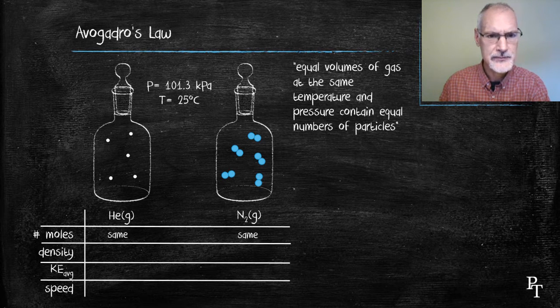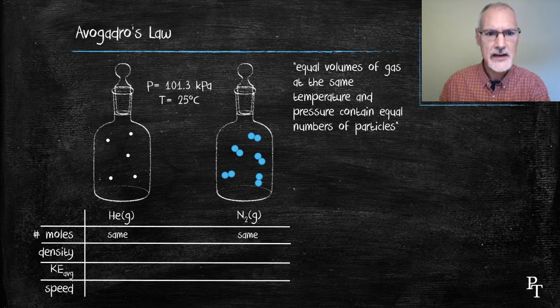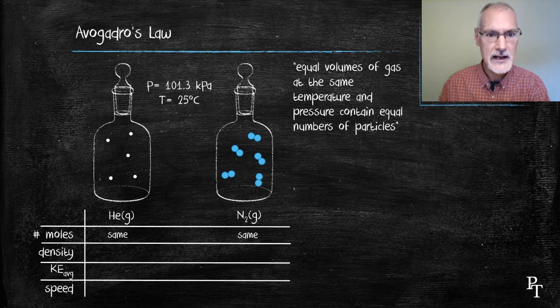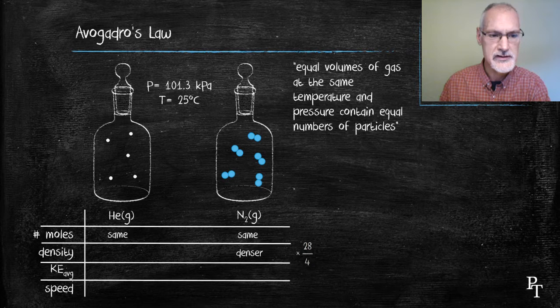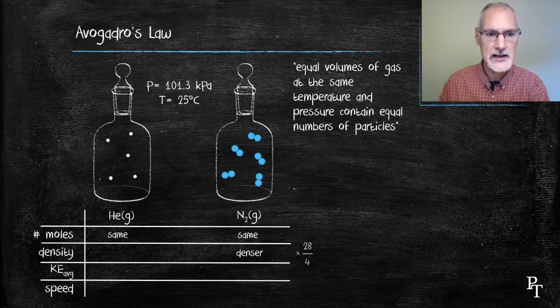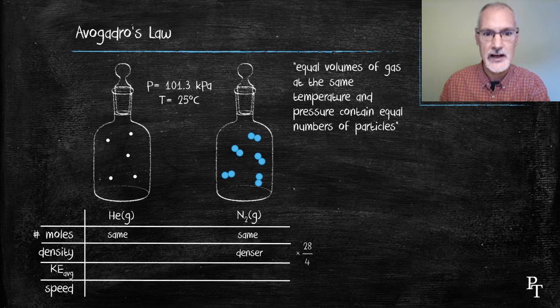Now what about density? Well density is mass over volume. They both have the same volume but they would have different masses. In fact the nitrogen gas, relative molar mass is 28, hydrogens being 4, I would consider the nitrogen gas to probably be about seven times denser.